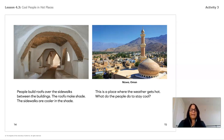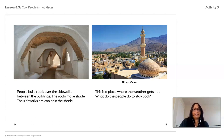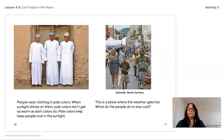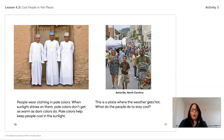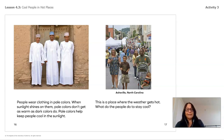Now we have Nizwa, Oman—a place where the weather gets hot. People wear clothing in pale colors. When sunlight shines on them, pale colors don't get as warm as dark colors do. Pale colors help keep people cool in the sunlight.